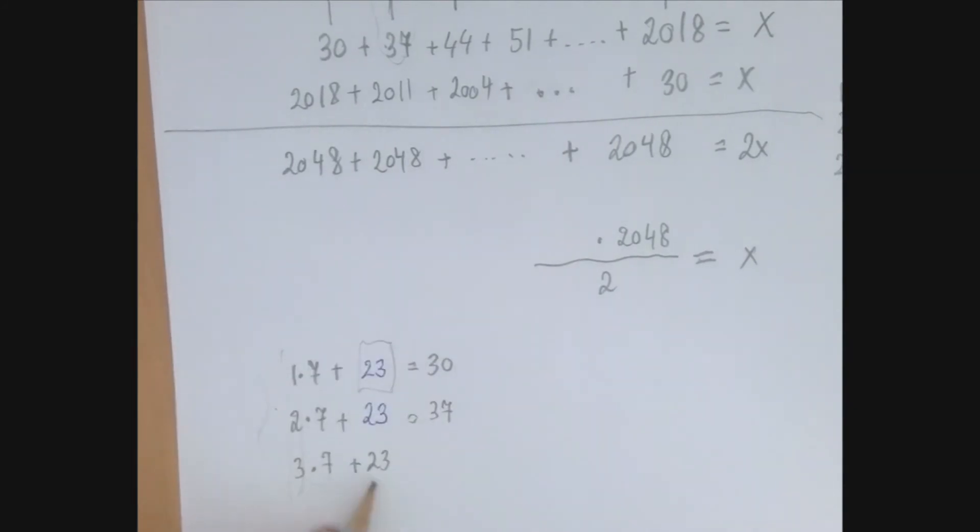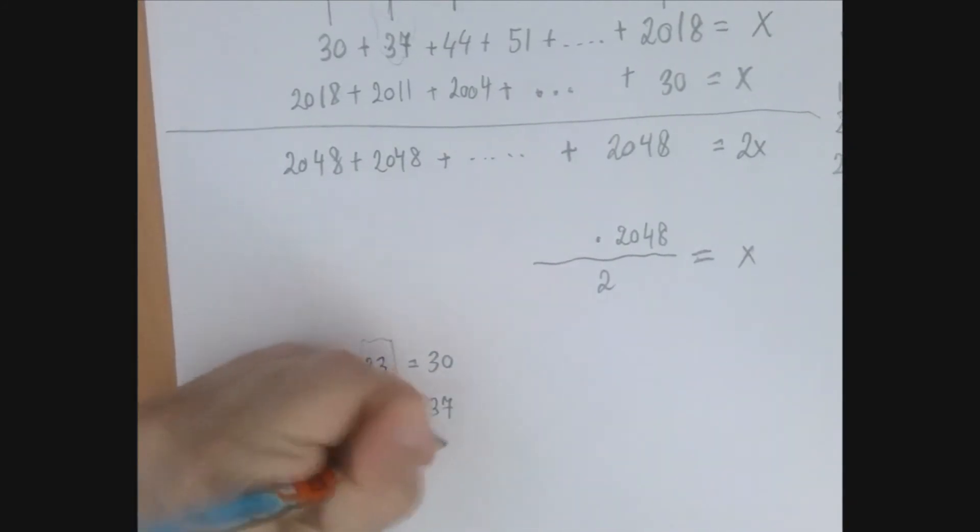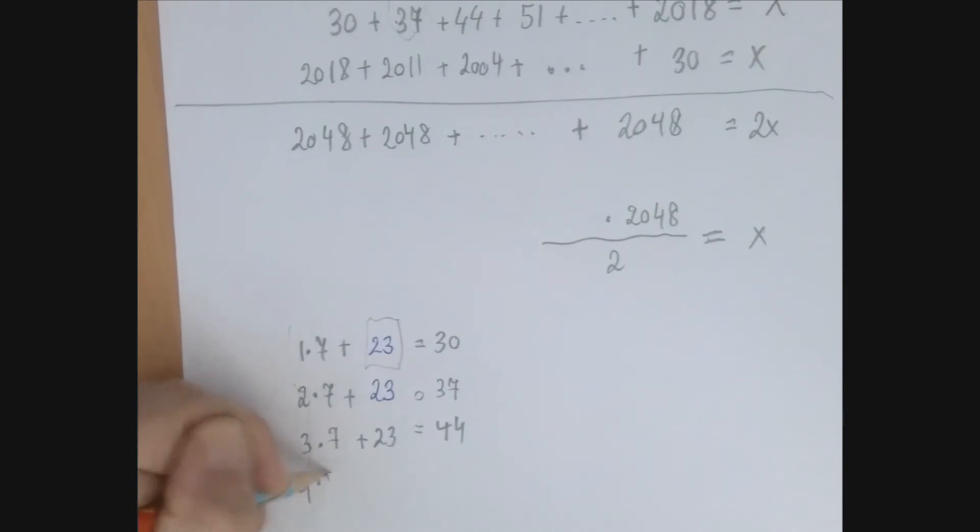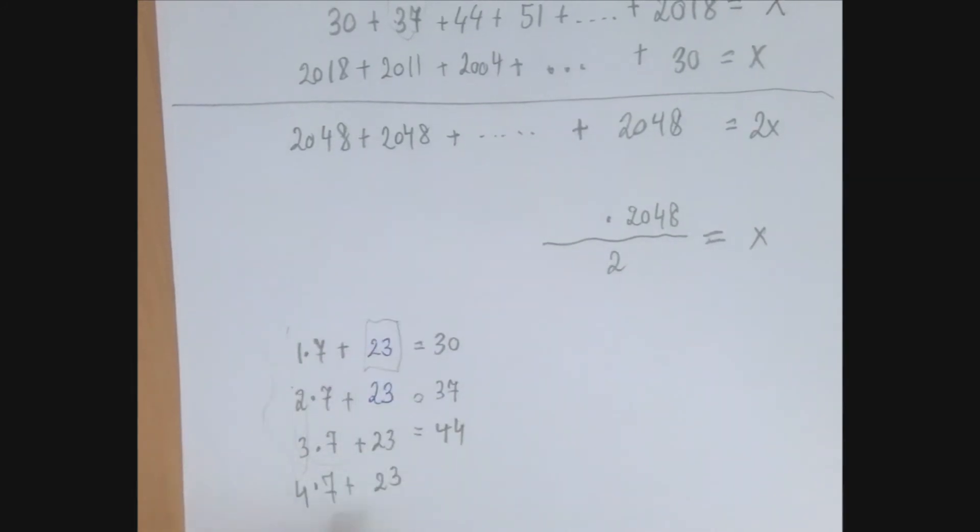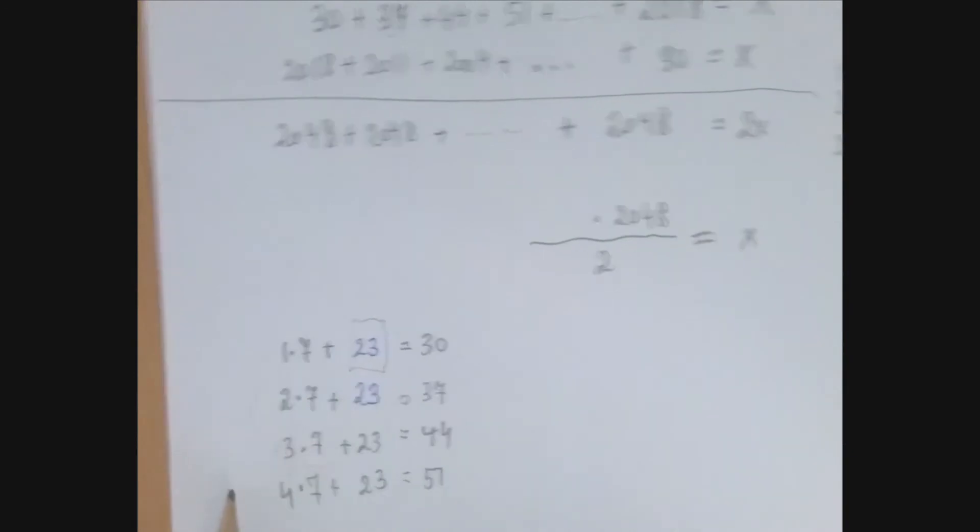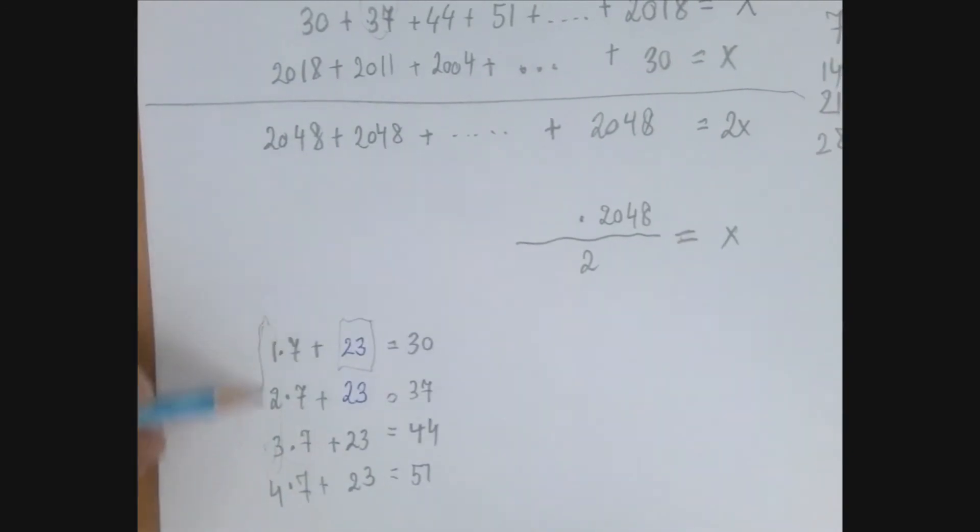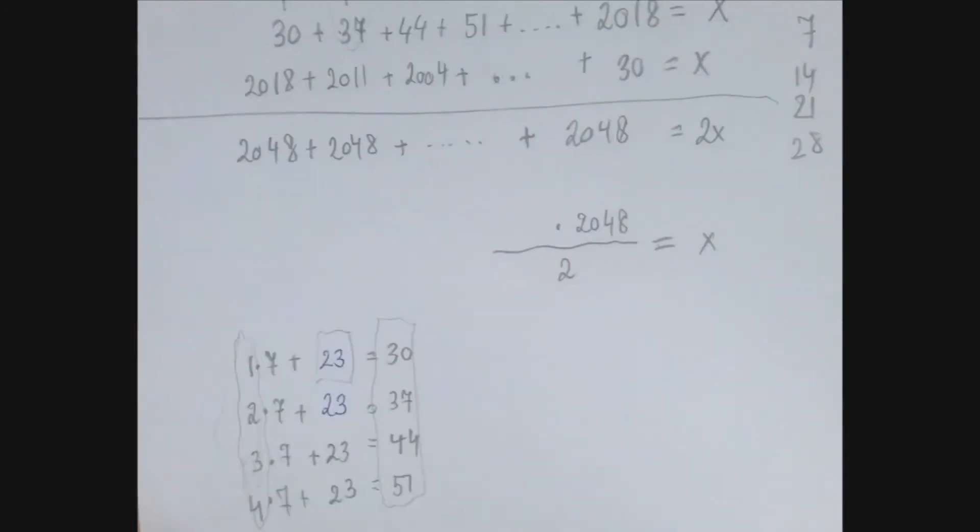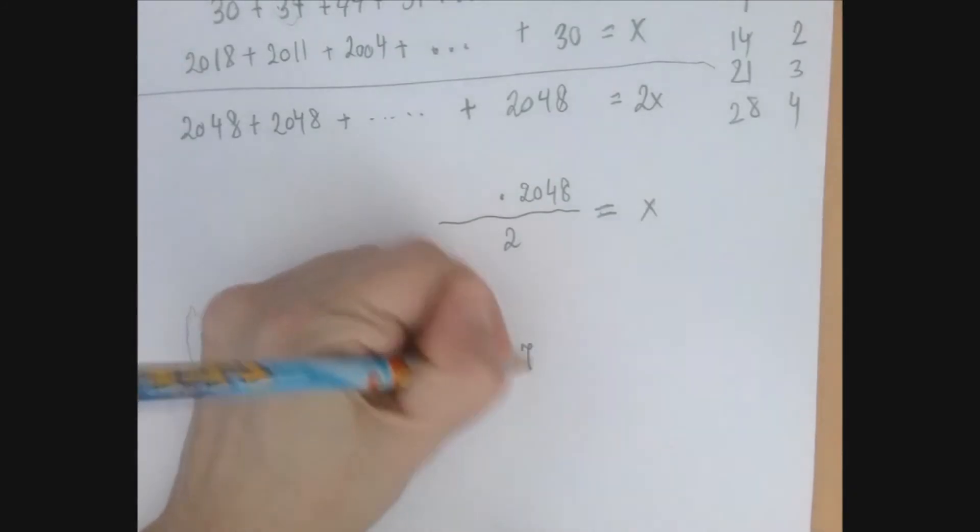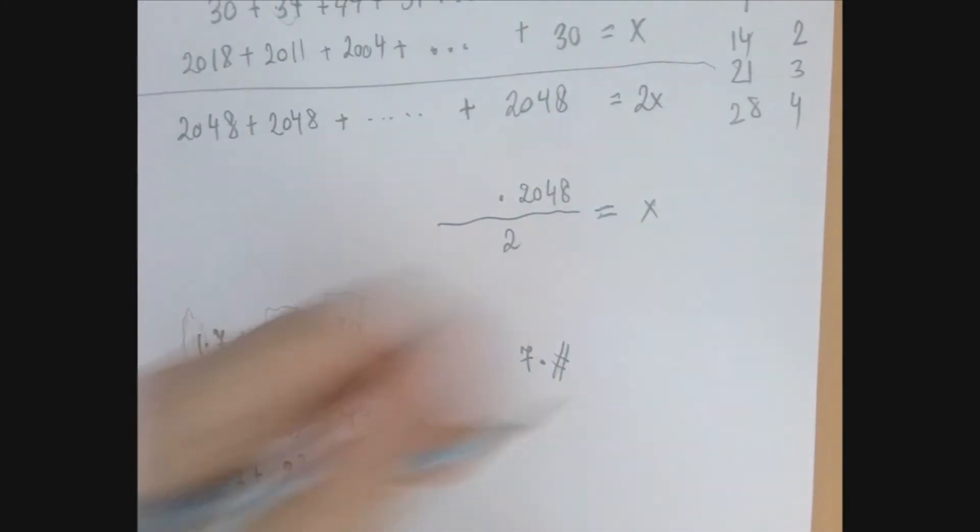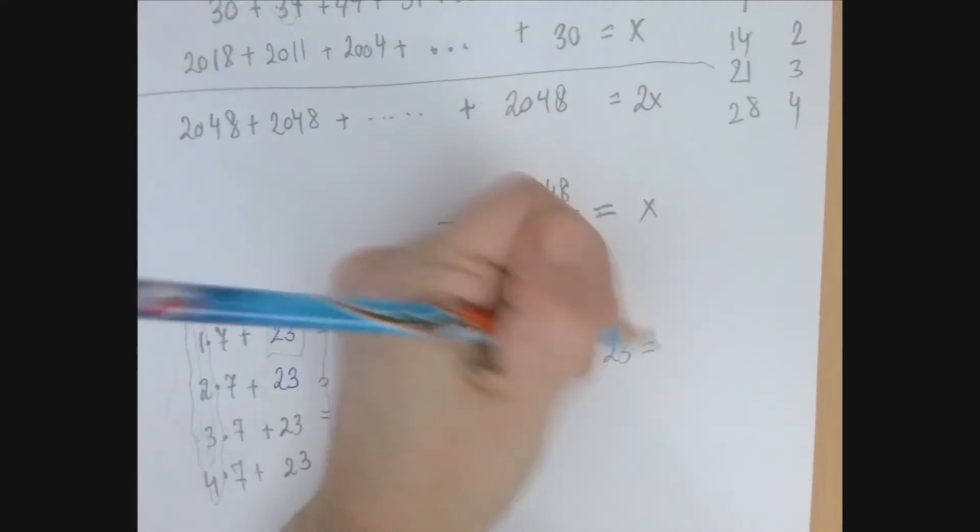So if we say 3 times 7 plus 23 is 21 plus 23, that is 44. Basically, this is going to keep, if we take 4 times 7 plus 23, that's going to be 7 larger than the previous one. That's 28 plus 23, that is 51. So basically, we have established a connection between this number and this number. And that is the following, 7 times the label plus 23 equals to the number in the sequence.